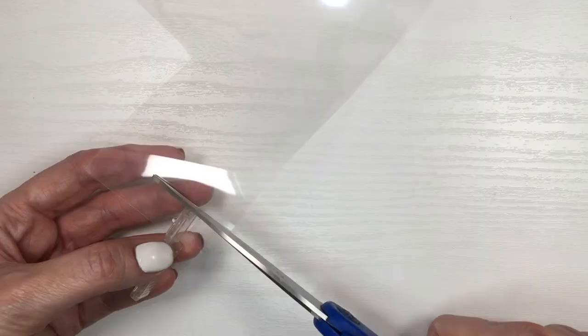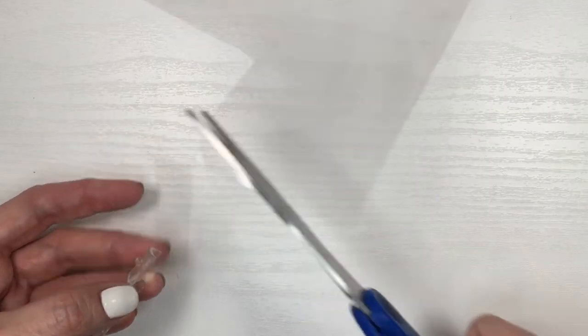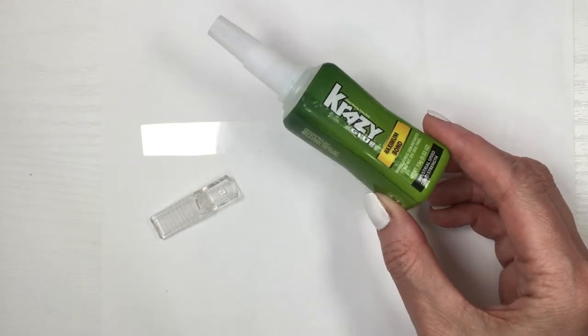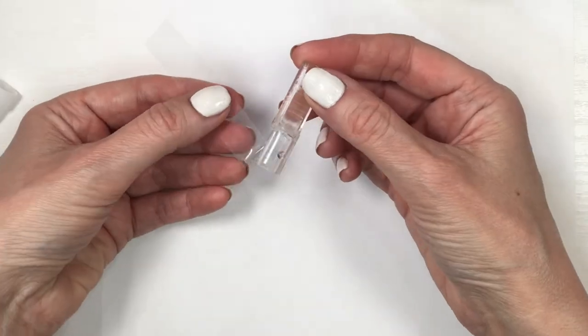For that, I'm going to be using acetate sheet. I'm going to be cutting a stripe like this, using my Crazy Glue - I do have a review for this coming soon. I'm going to be adding that to my stripe, place it inside like this, and just hold it there.